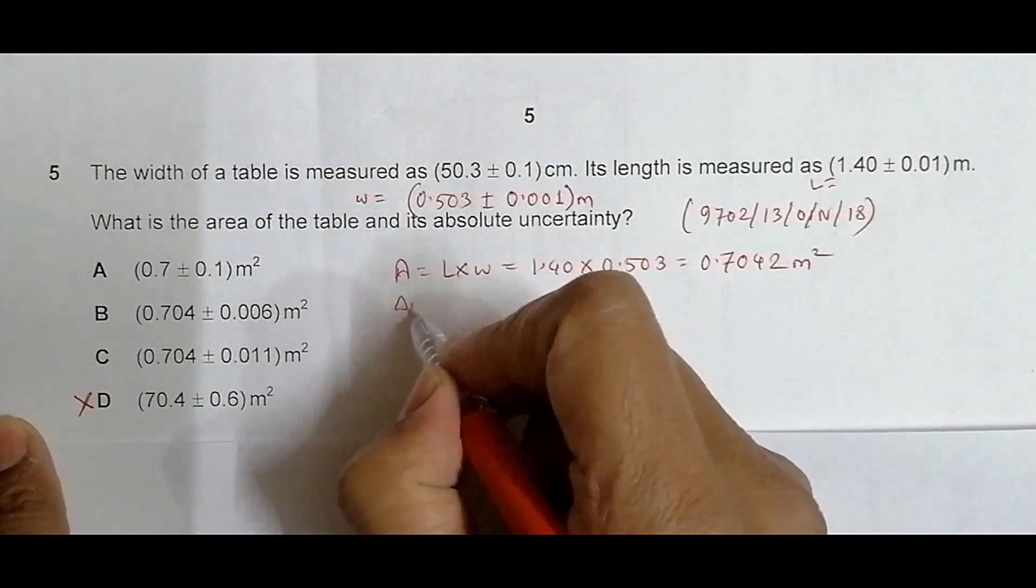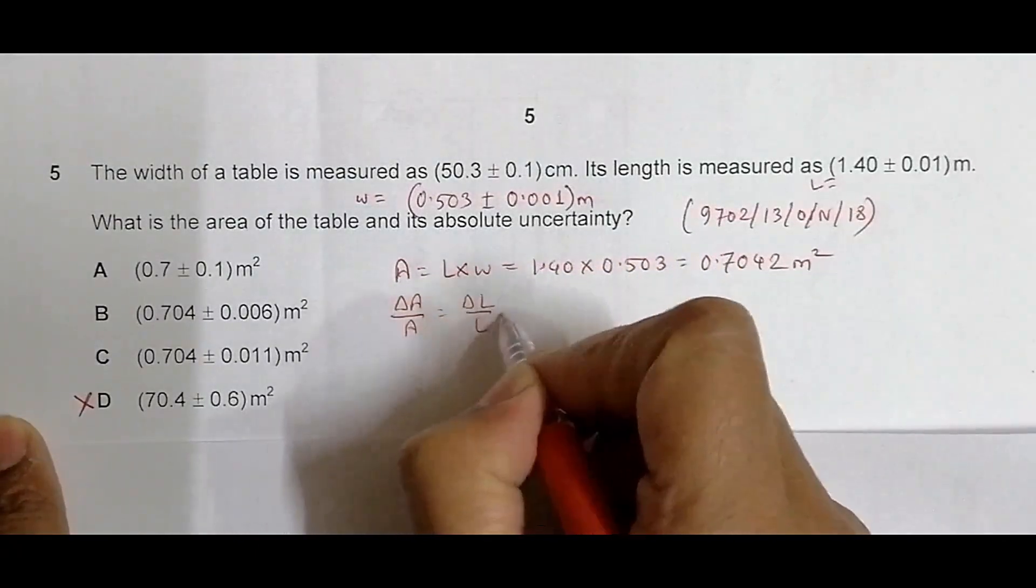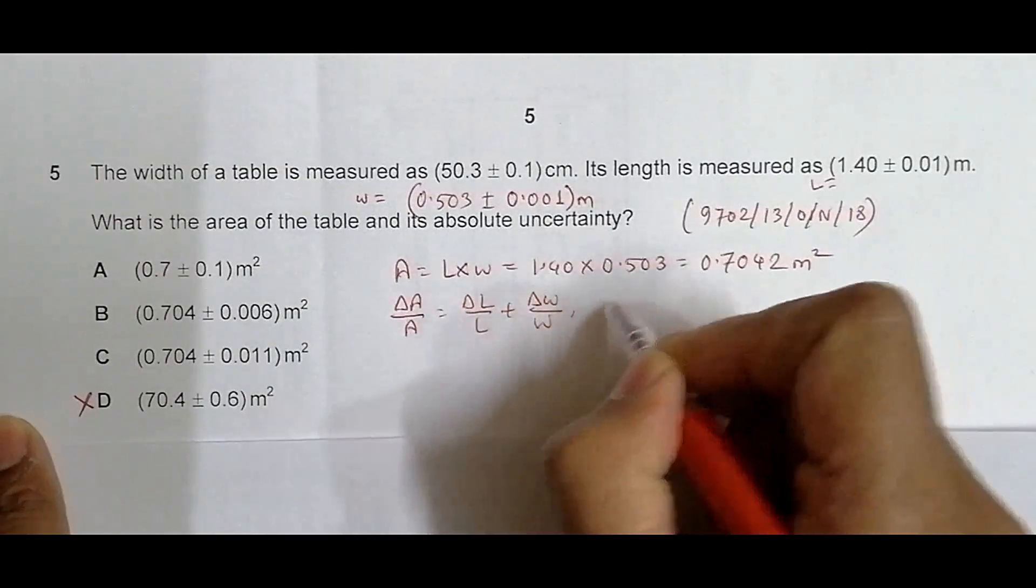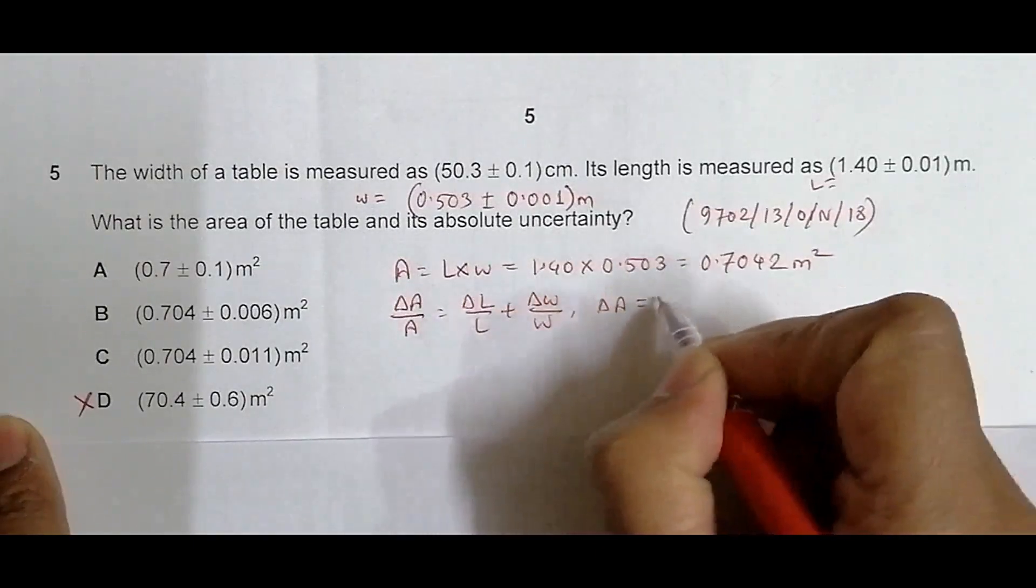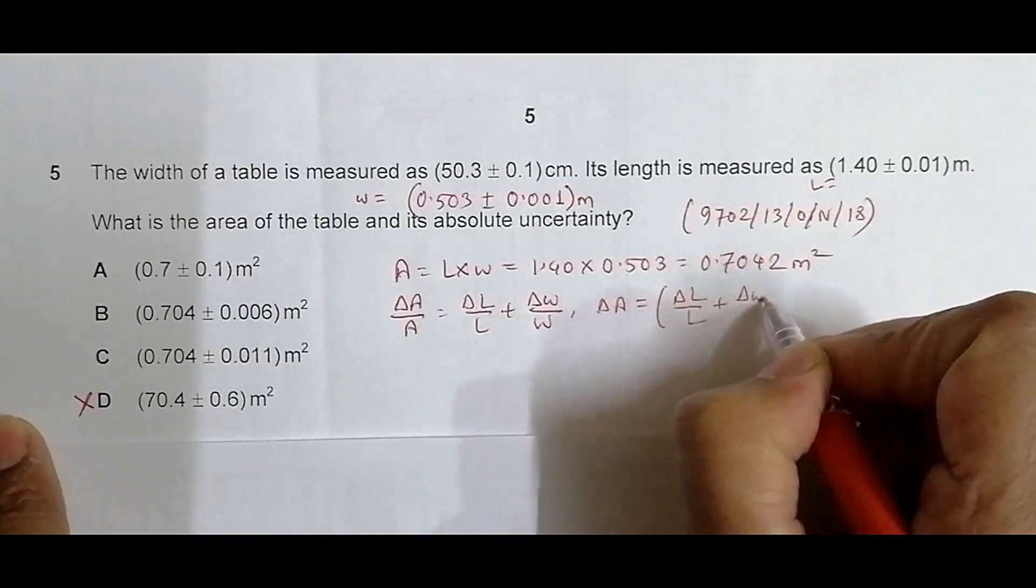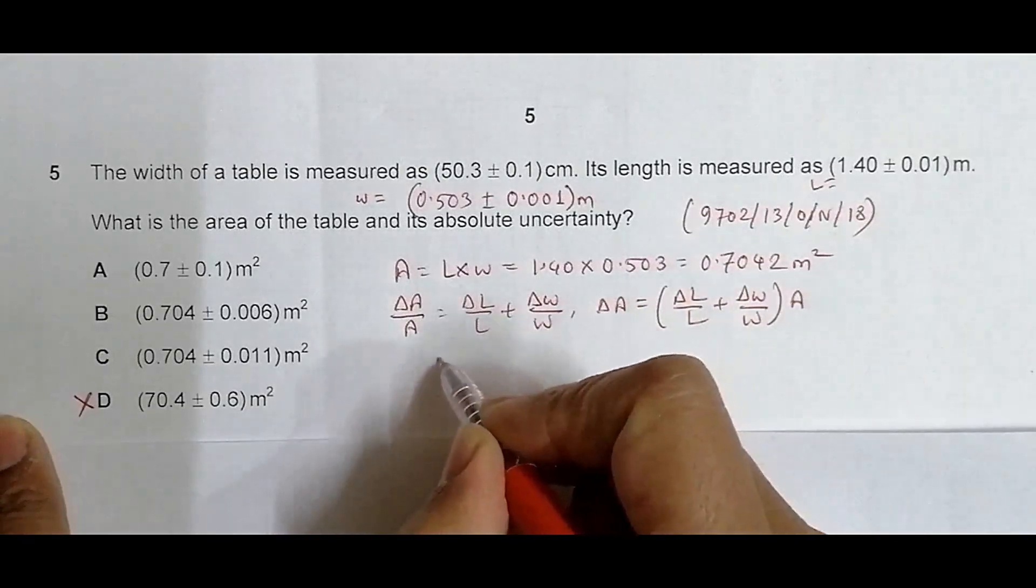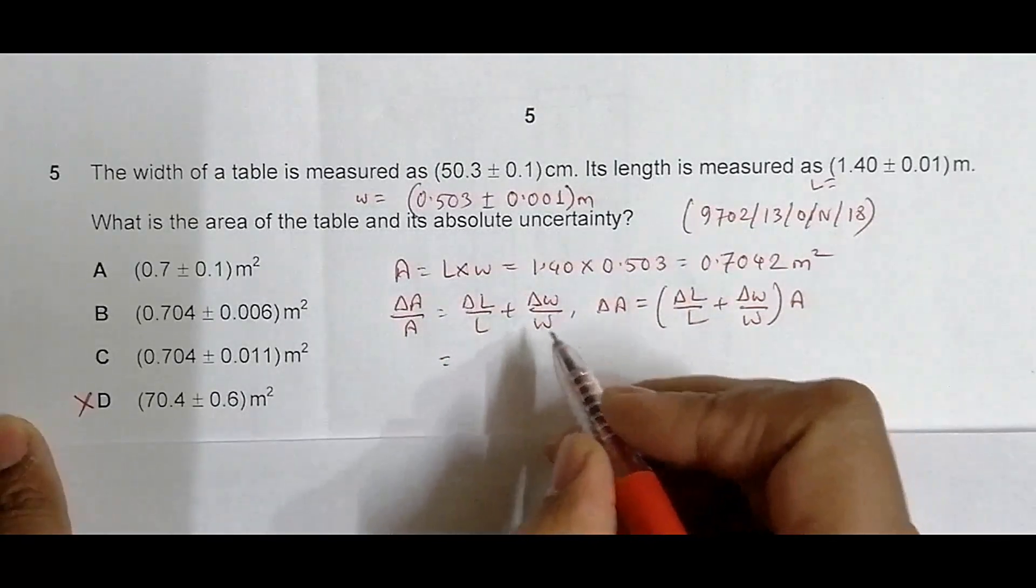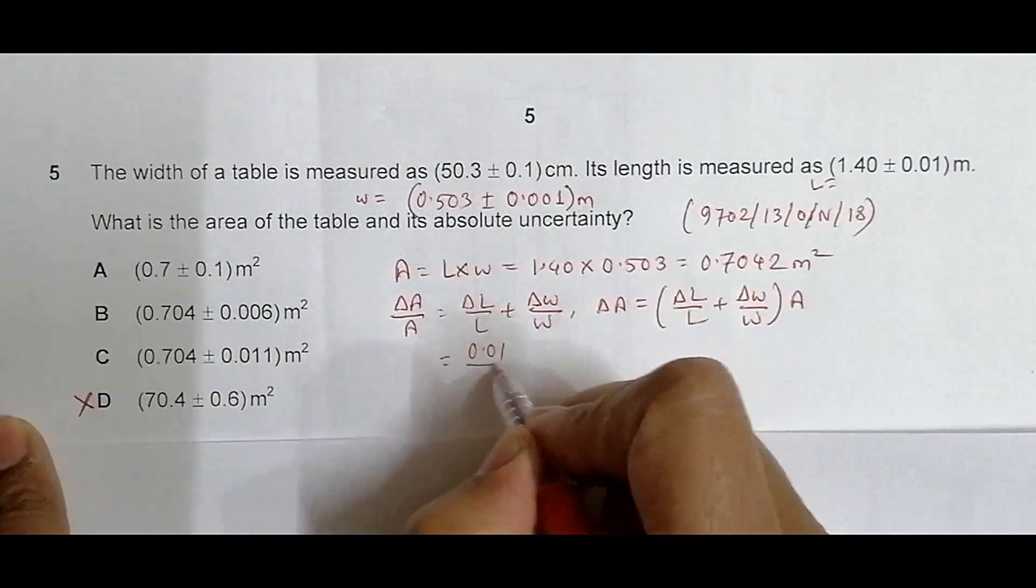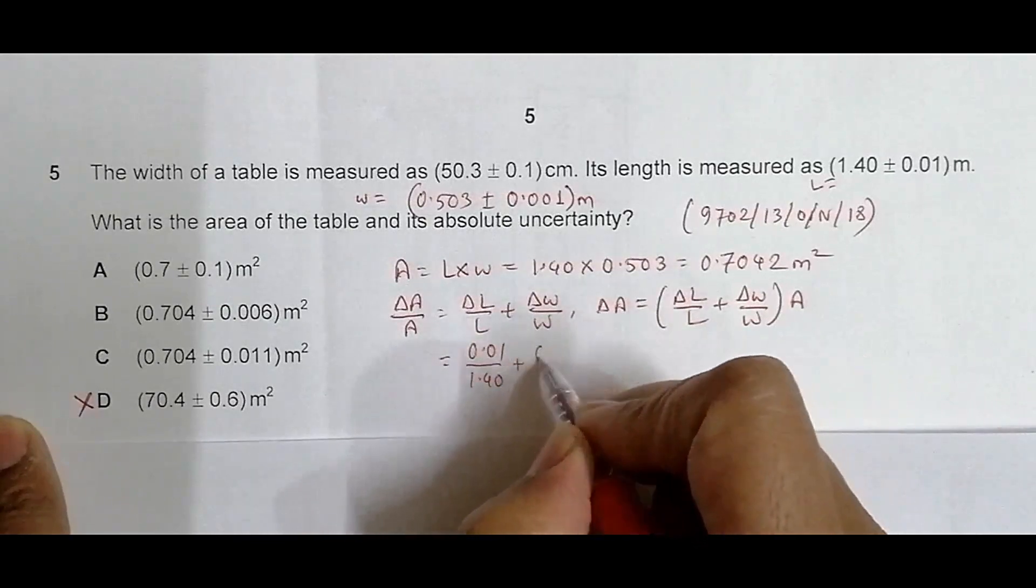Now the uncertainty is found by this relation: ΔA/A should be equal to ΔL/L plus ΔW/W, which means ΔA is equal to (ΔL/L plus ΔW/W) times A. So this becomes ΔA equals (0.01/1.40 plus 0.001/0.503) times 0.7042.